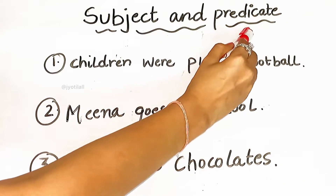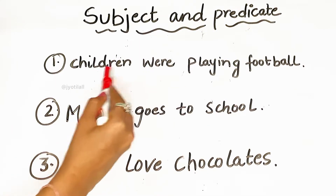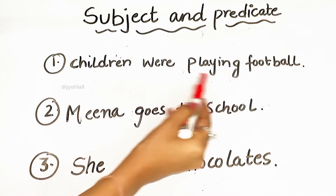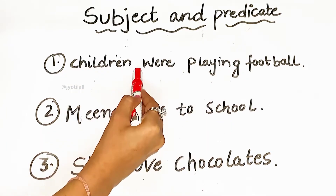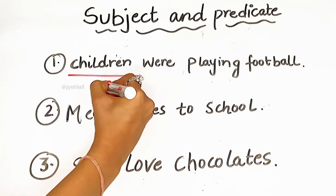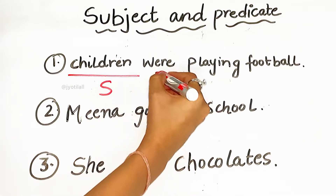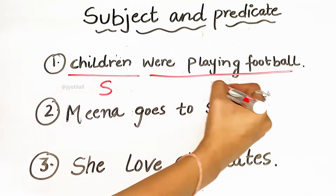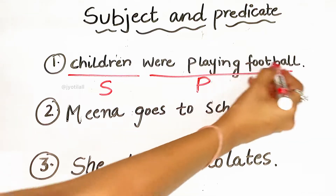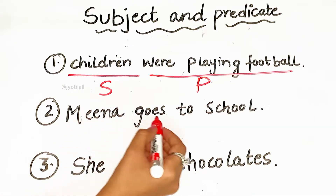Subject and predicate. First example: 'Children were playing football.' Who is playing football? Children. So 'children' is the subject here, and 'were playing football' is the predicate.